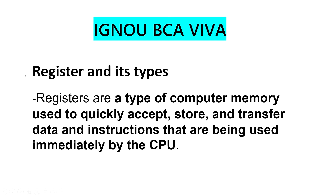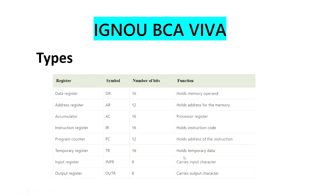Define registers and its types. Registers are a type of computer memory used to quickly accept, store and transfer data and instructions that are being used immediately by the CPU. Types include: Data Registers, Address Registers, and Accumulator. You can pause and take a screenshot to learn from this.